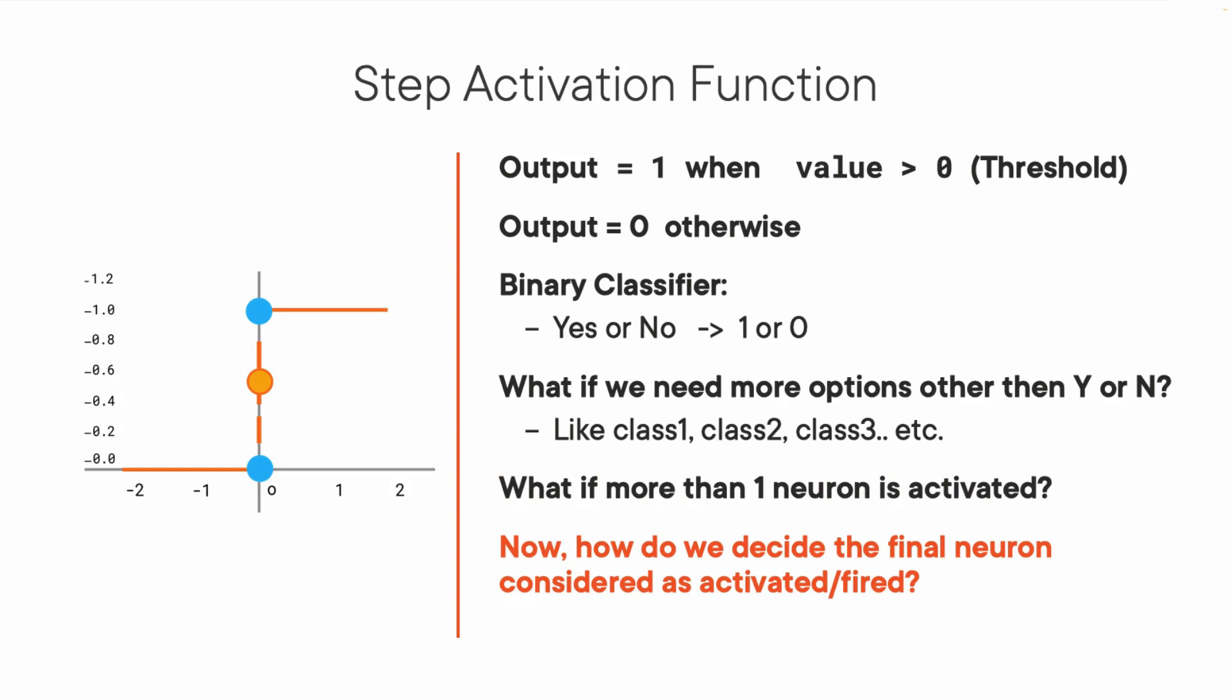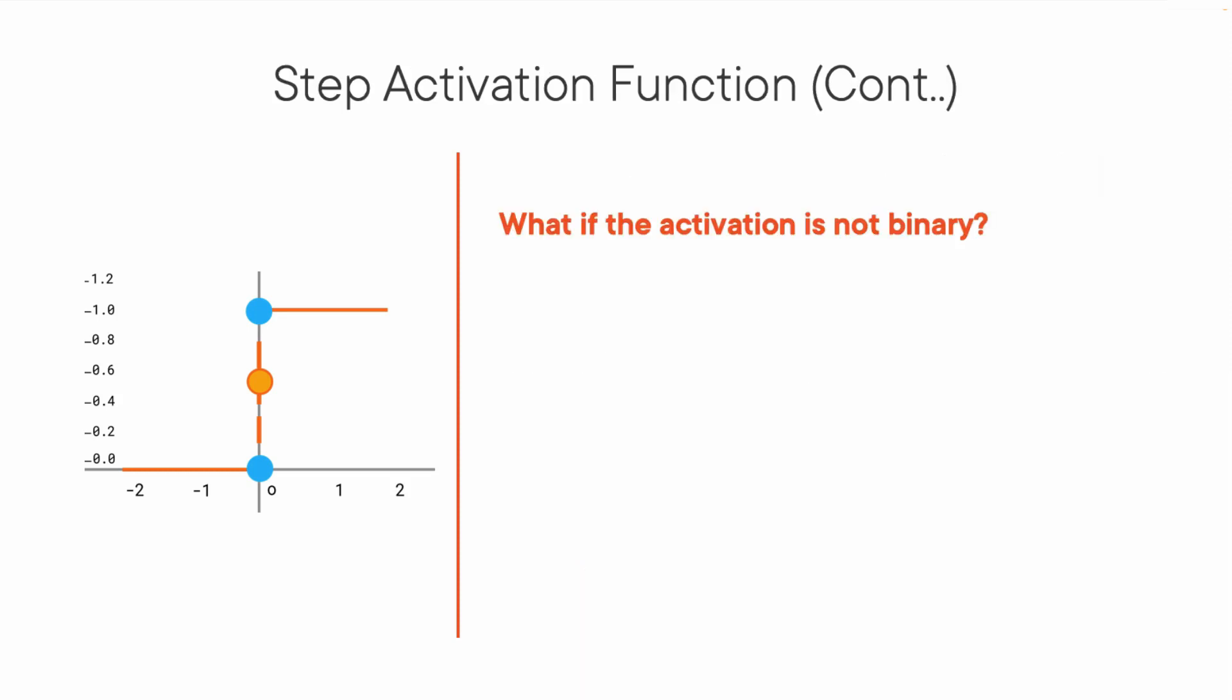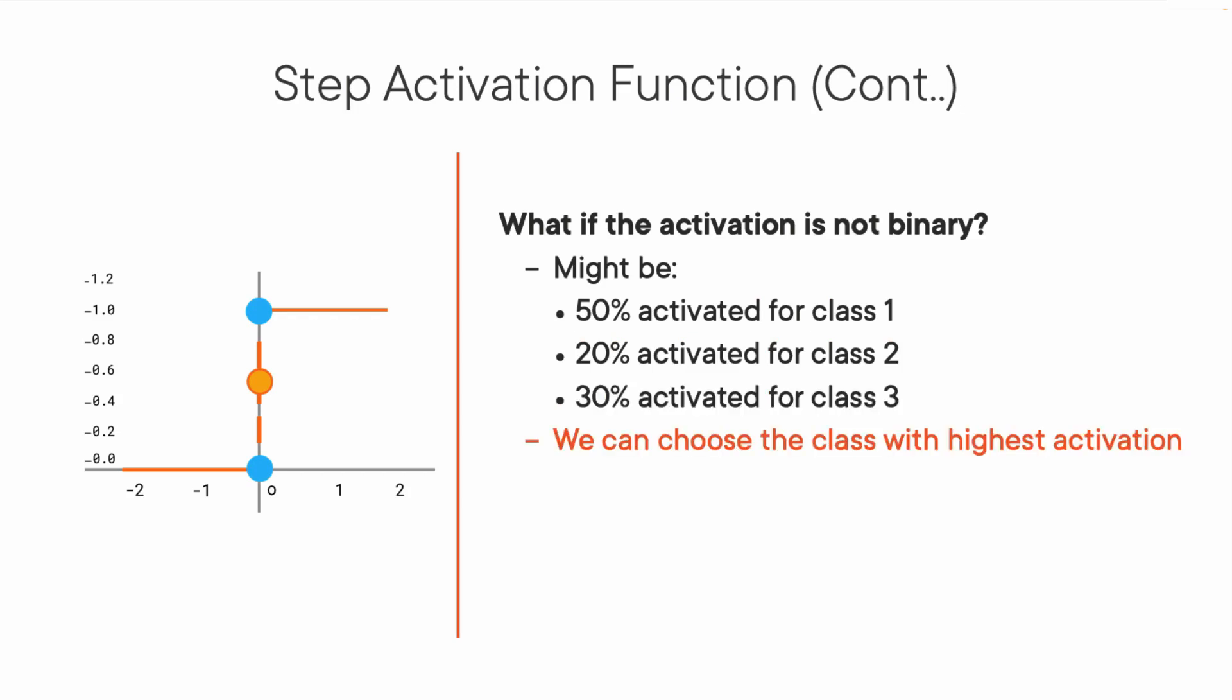It becomes complicated. We want the network to activate only one neuron and others should be 0. Think about what if the activation was not binary and instead would say 50% activated for class 1, class 2 activated 20%, and class 3 activated 30%. In this case, if more than one neuron activates, we could find which neuron has the highest activation.